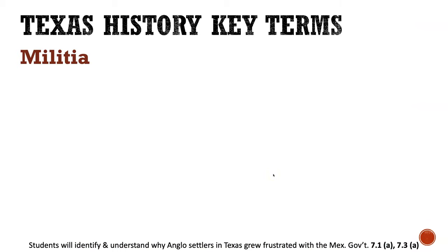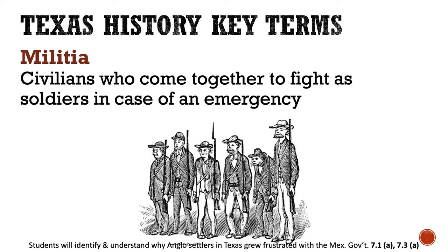Our next key term is militia. Militia are civilians who come together to fight as soldiers in case of an emergency. Years ago when Texas was so rural and didn't have many big cities, there weren't a lot of soldiers or forts convenient to send in emergencies like Indian attacks or bandits. So a militia was a group of just citizens — maybe a banker, a blacksmith, an innkeeper, a store owner, farmers — who if there was an emergency dropped their tools, picked up their guns, jumped on their horses, and went to fight to protect the land.